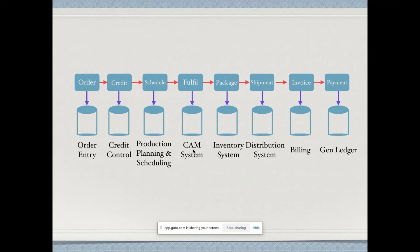Then we have the inventory management system, which is a process by which you track your goods throughout the supply chain — from purchasing through production to sales. Then we have distributed order management, which is a method used to optimize fulfillment so that orders arrive to customers on time.